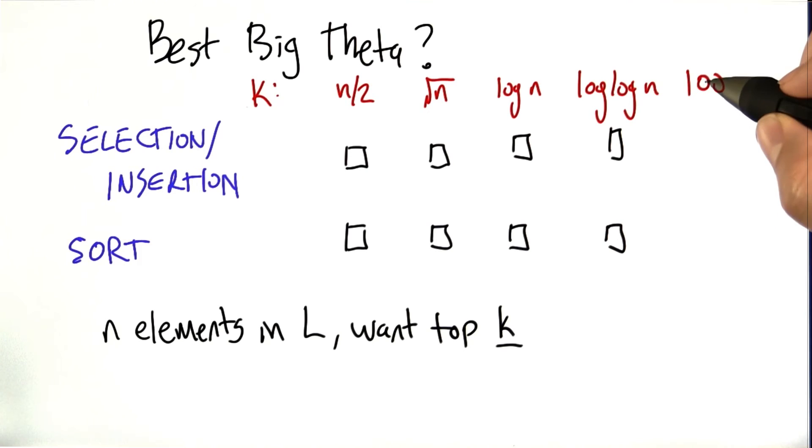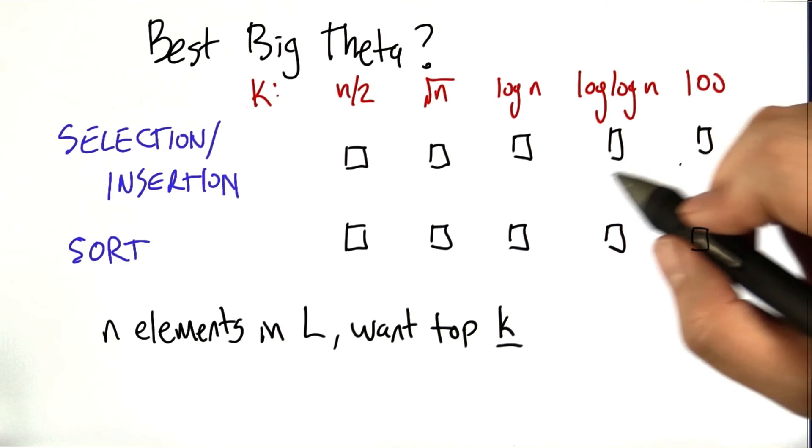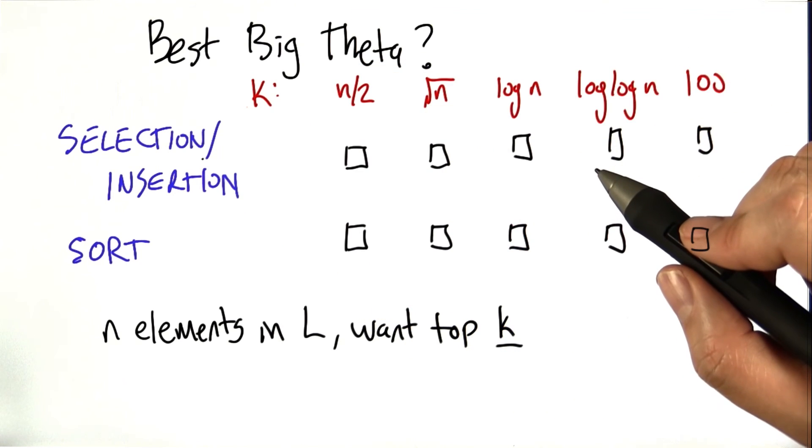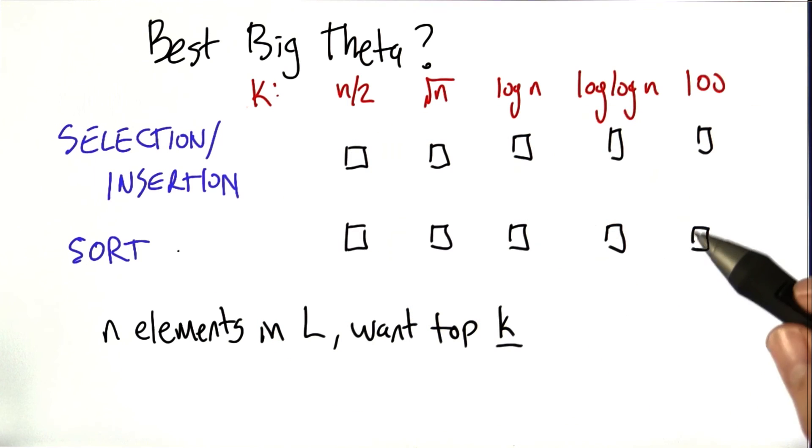And finally, let's say you want the top 100. This is a common thing that you see on the internet a lot. Top 100 movies, the top 100 Beatles songs, the top 100 times I've used the phrase top 100. There's lots of different contexts in which this appears. And if you're going to do that, are you better off using a selection or insertion algorithm or to sort the whole list?